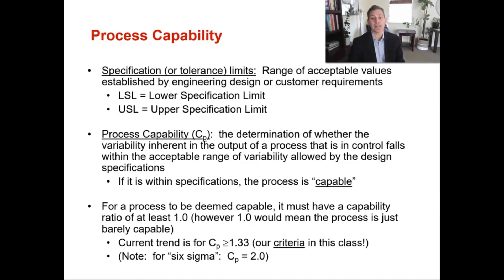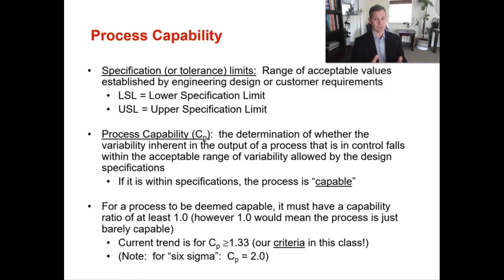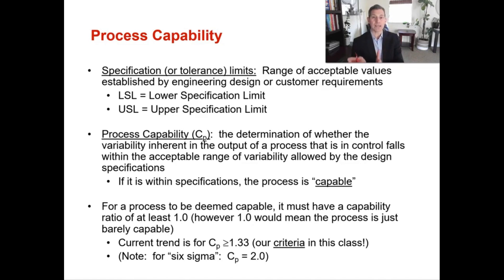Process capability is the determination of whether the variability inherent in the output of a process is in control and falls within the acceptable range of variability allowed by the design specifications. If it falls within those specifications, then the process is capable. So if Mars, when making this bag of candy, is outputting somewhere from 9 to 11 Skittles, it meets the design specifications and therefore it is a capable process.